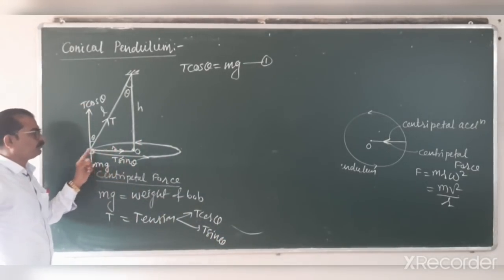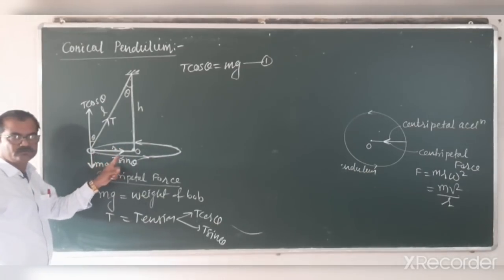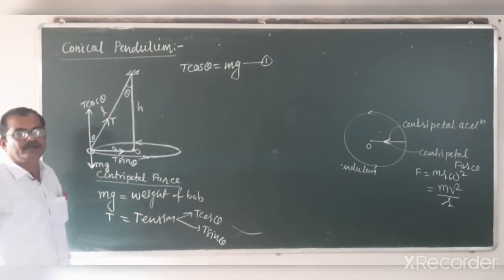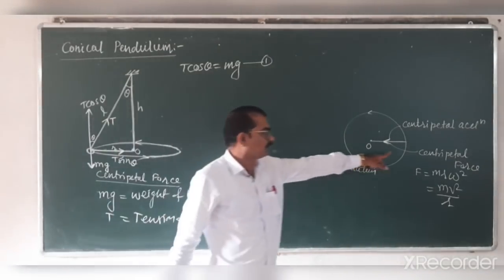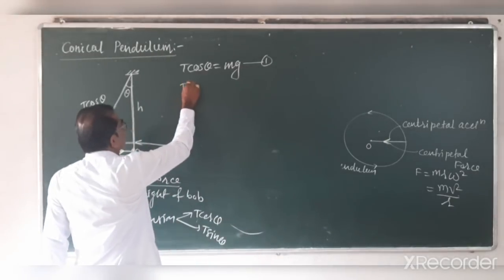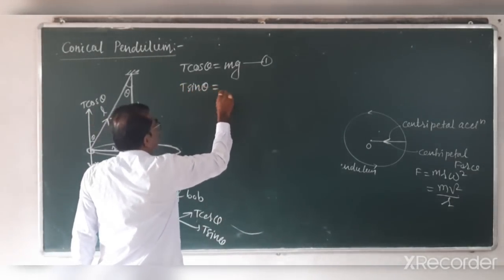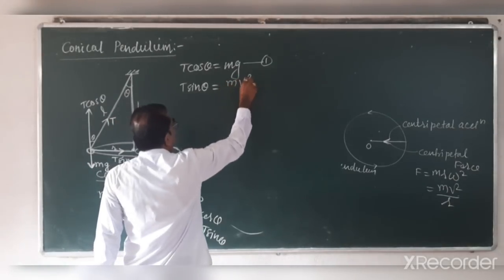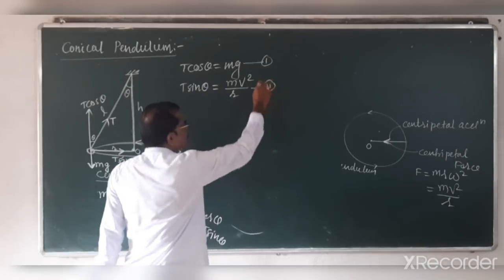T sin theta is directed towards the center. T sin theta will provide the necessary centripetal force for the circular motion. Therefore, we can write: T sin theta equals mv squared upon R. This is equation number 2.